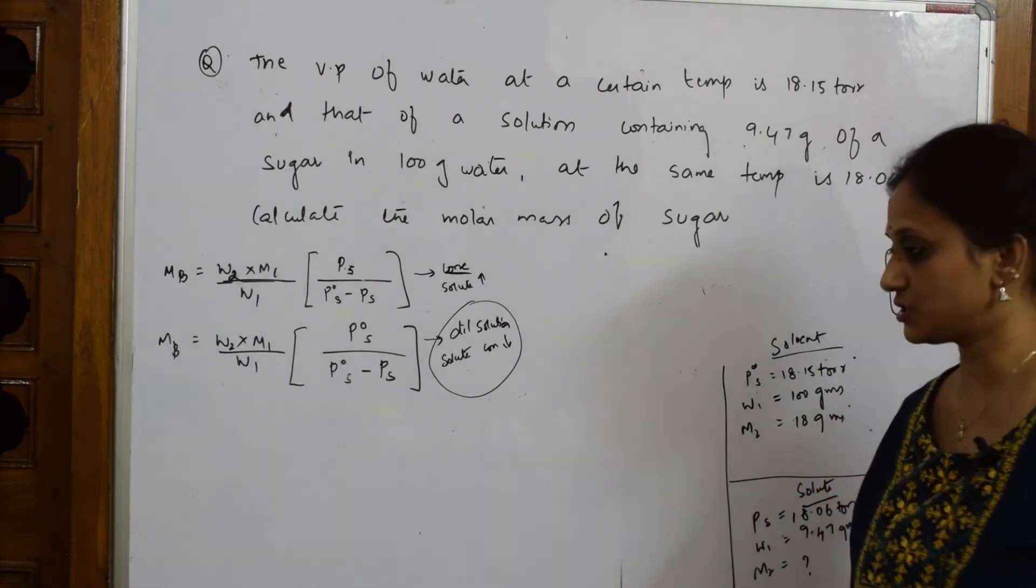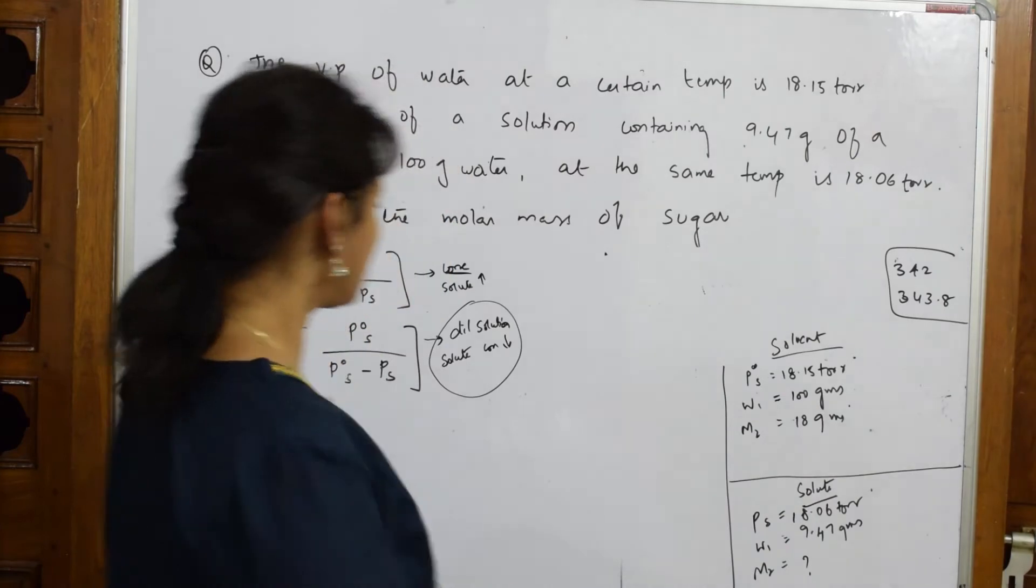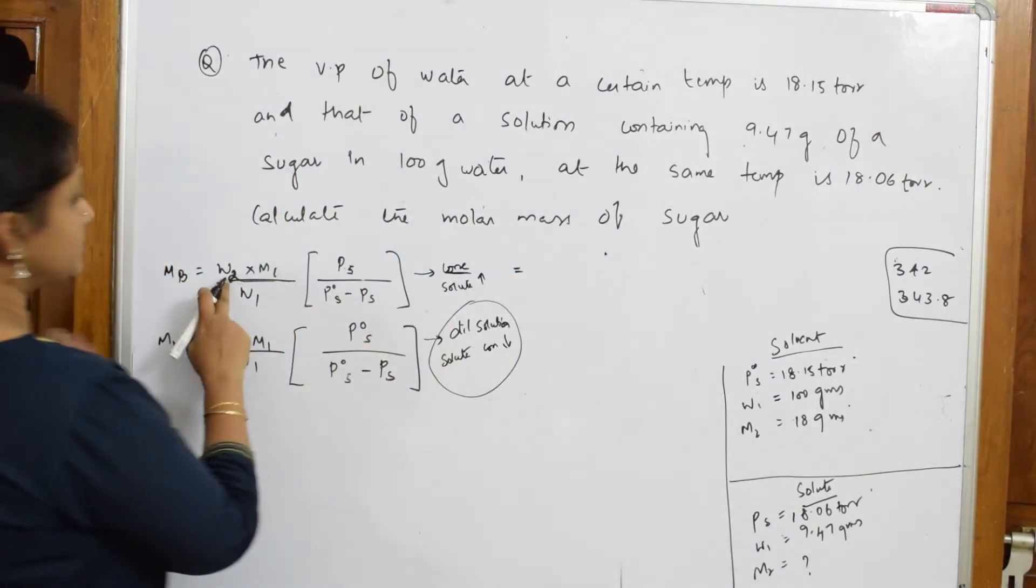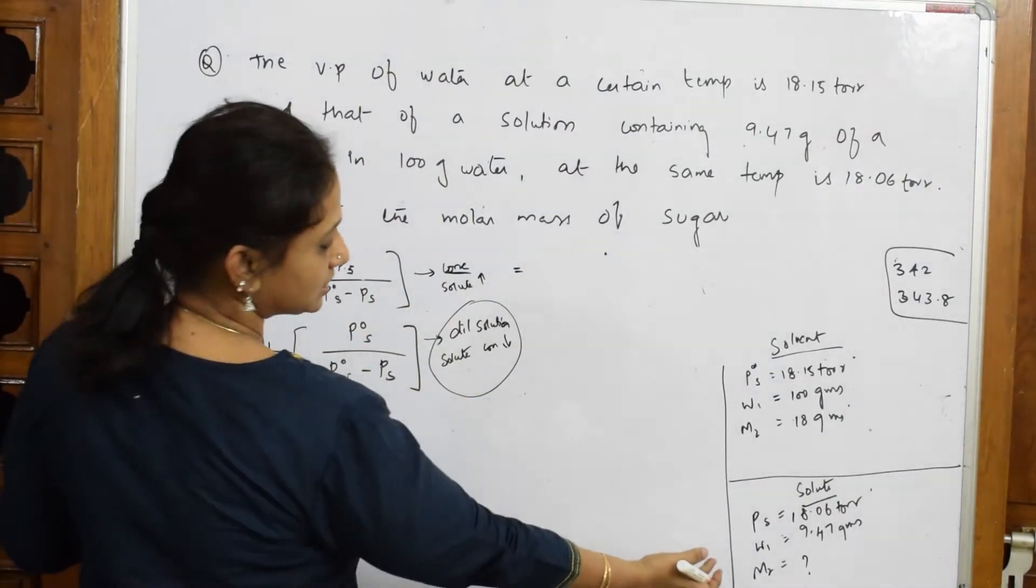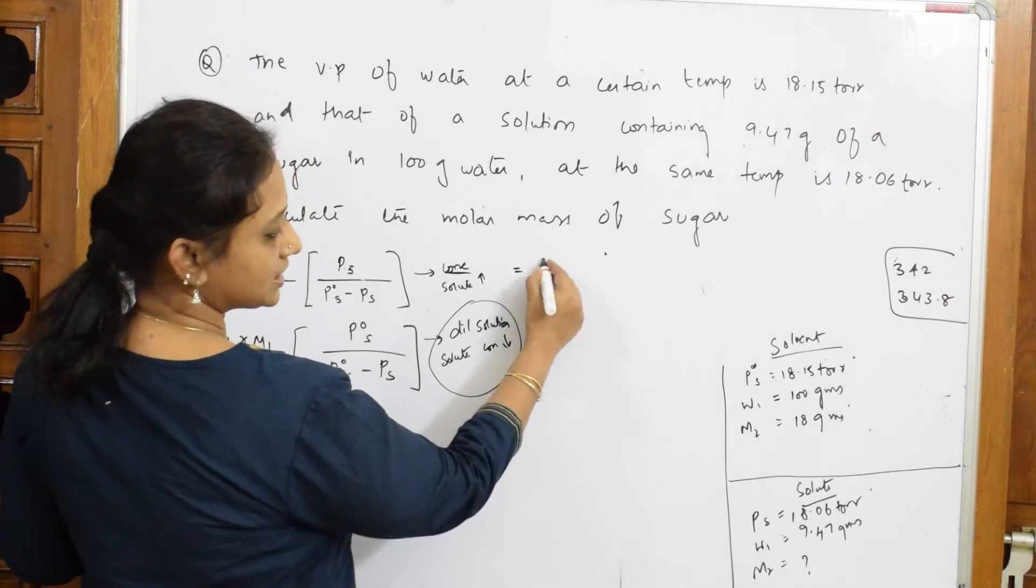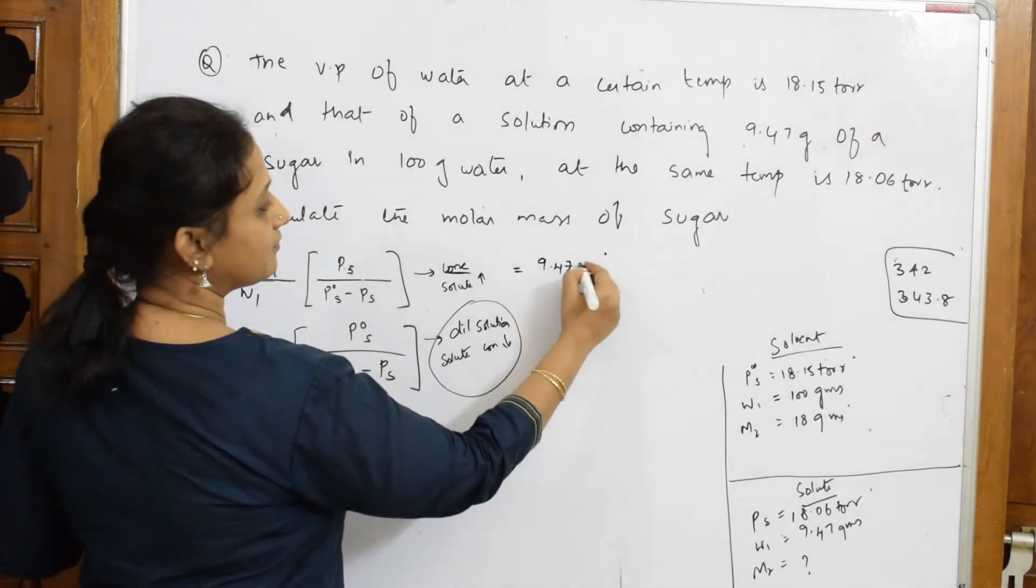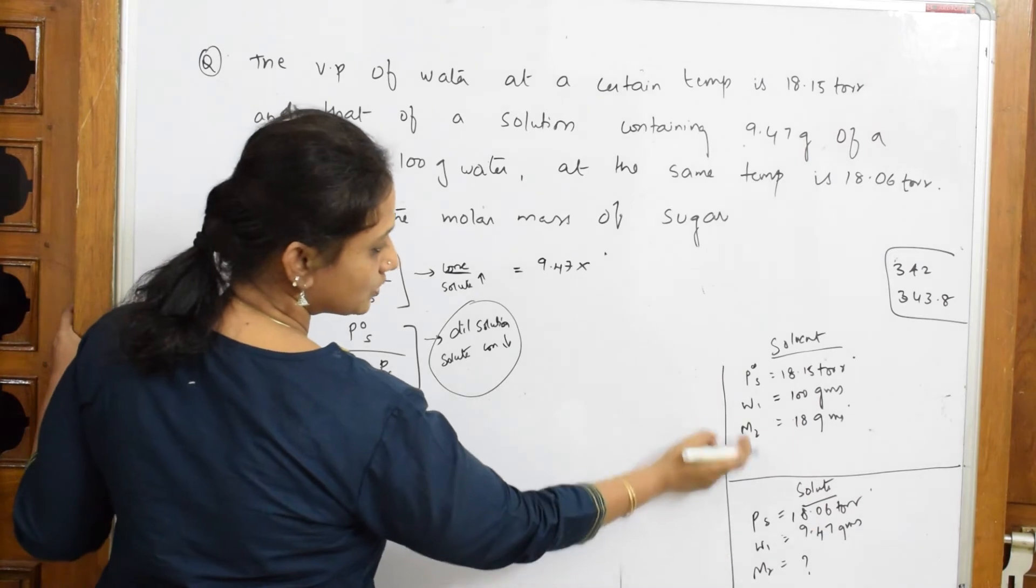Substitute directly in this formula. What do I get if I substitute the first one? What is your w₂? It is 9.47 into your M₁. How much is M₁ given to us?